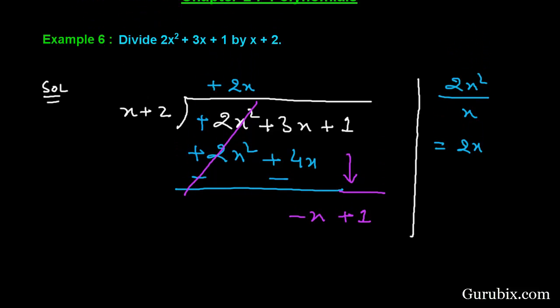To find the next term in the quotient, we shall divide this minus x by the first term of the divisor, which is x. Then we have minus 1. This means the next term in the quotient is minus 1. Now we shall multiply minus 1 with x plus 2. Then we have minus x minus 2.